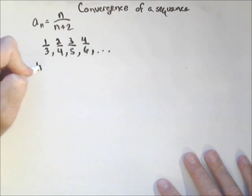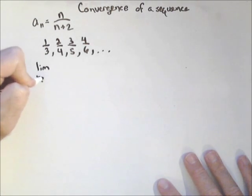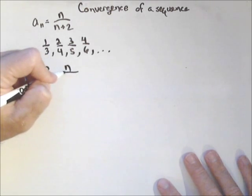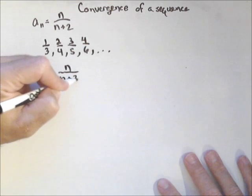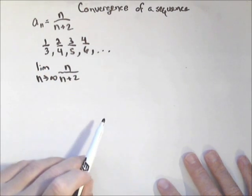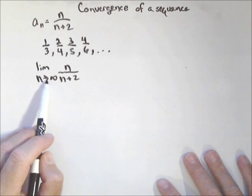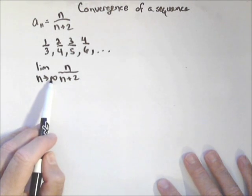So we're actually just calculating a limit. So limit as n goes to infinity of n over n plus two. We've seen this before. We've used limit notation, and remember, as n goes to infinity, we're talking about end behavior.